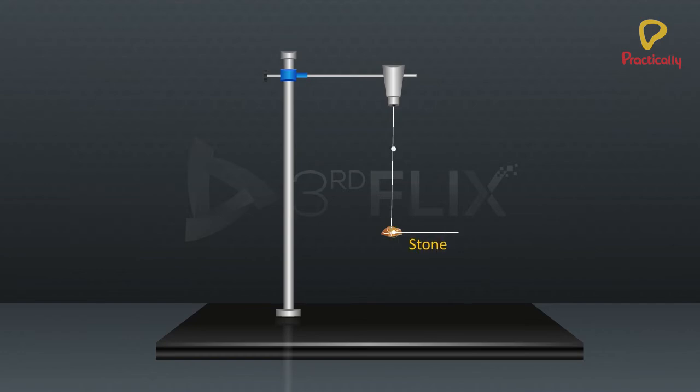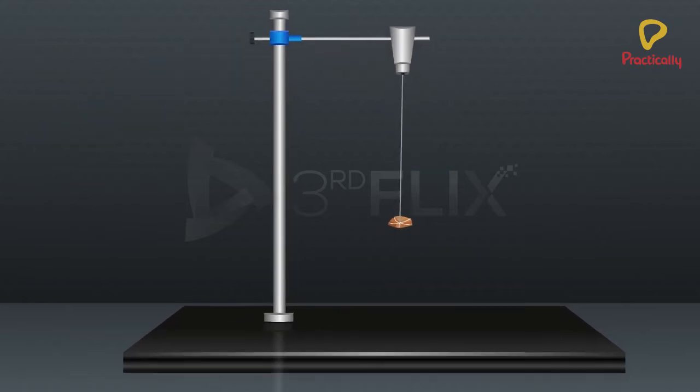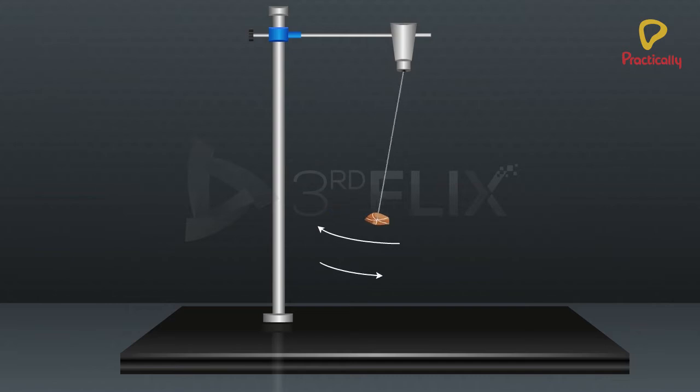Take a stone tied to a thread and hold through the thread, letting the stone hang. It is called a pendulum. When you move the stone to one side and leave, it starts moving in a to and fro motion. It is a periodic motion.